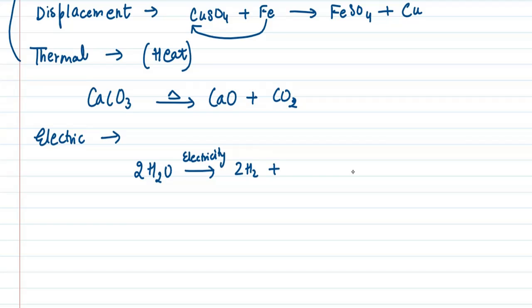Next is photo decomposition. In photo decomposition, you need to give sunlight to it. In the presence of sunlight we have decomposition. One very common example is silver chloride. If you keep it under sunlight, it will give you Ag and chlorine as a reactant, and this is the balanced form.